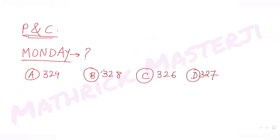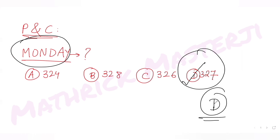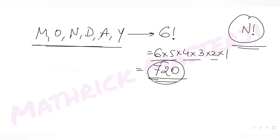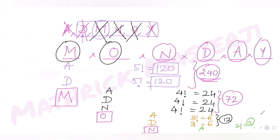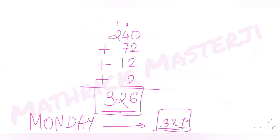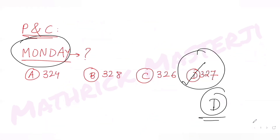So in dictionary order, the word MONDAY has rank 327, which matches option D. The key concept used is that n different things can be arranged in a straight line in n! ways. Starting with the six letters of MONDAY arranged alphabetically, and counting words letter by letter, we determined the rank to be 327, making option D the correct answer.